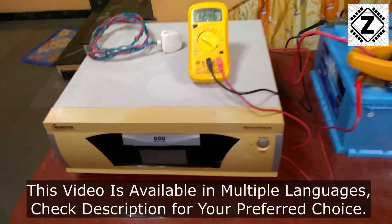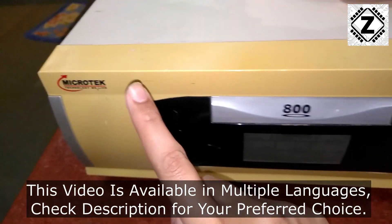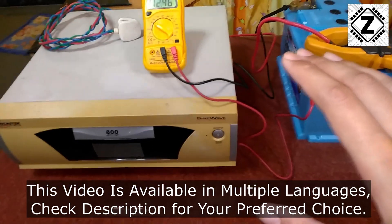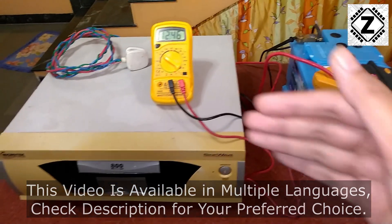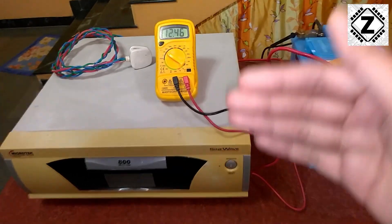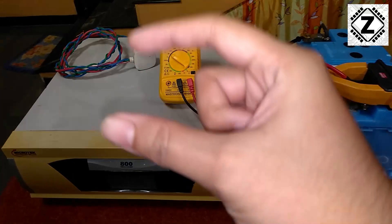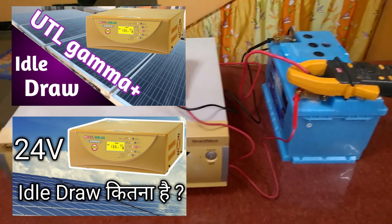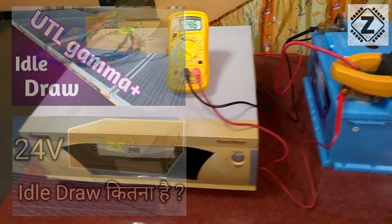Hey guys, hello and welcome to Zen Innovations. Today I have this Microtech 800VA sine wave inverter with me. We are going to test the idle consumption of this inverter. Before this, we have also tested the UTL Gamma Plus in both 12V and 24V versions - you can find the videos or links in the description below.